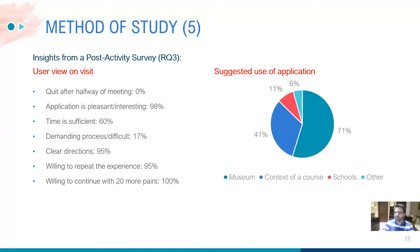The 63 participants also completed a post-activity questionnaire expressing their review of the visit. One interesting point was that halfway through the visit, after completing the 13th pair, they were given the option to quit — none of the participants agreed to do so. 98% of participants found the application pleasant and interesting. Regarding the allowed time, 60% stated that the time was sufficient, while 17% found the process demanding or difficult. 95% of participants found the provided instructions clear, and 95% said they would be willing to repeat the experience in the future. When asked if they would continue with another 20 pairs, all participants answered positively.